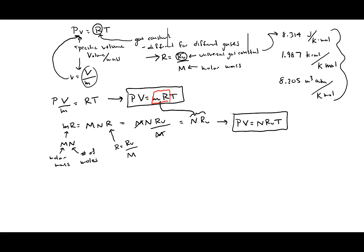PV = N·Ru·T is another form of the ideal gas law. Now let's look at the volume: the total volume V equals the mole number N multiplied by the molar specific volume (v̄). The molar specific volume has units of volume per mole — for example, meters cubed per kilomole or foot cubed per pound-mole.